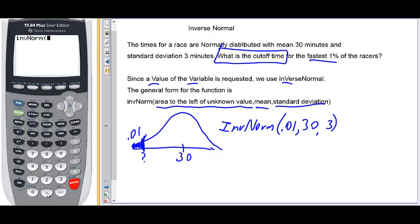Area to the left of the unknown value is 0.01, the mean is 30, the standard deviation is 3, close parenthesis. Enter. So it looks like x is about 23 minutes for the cutoff for the 1% fastest runners.